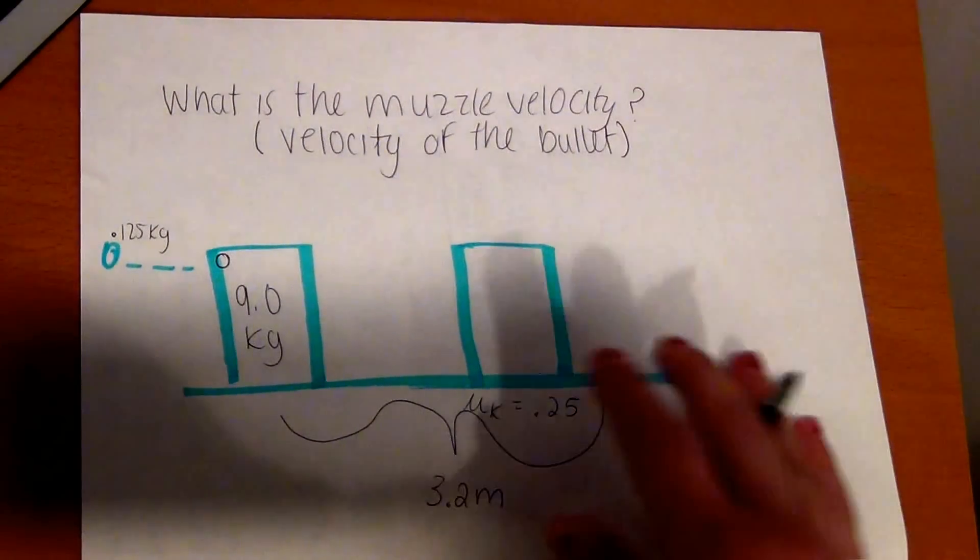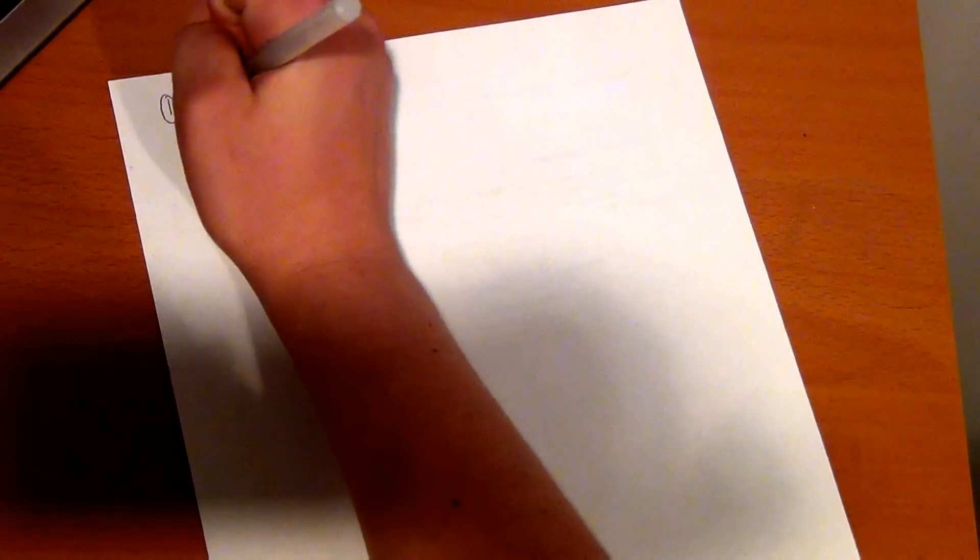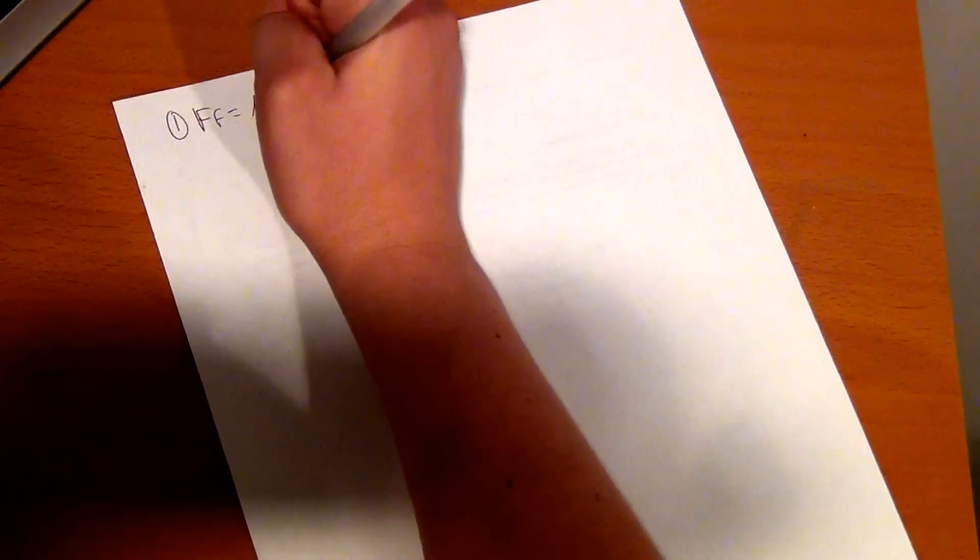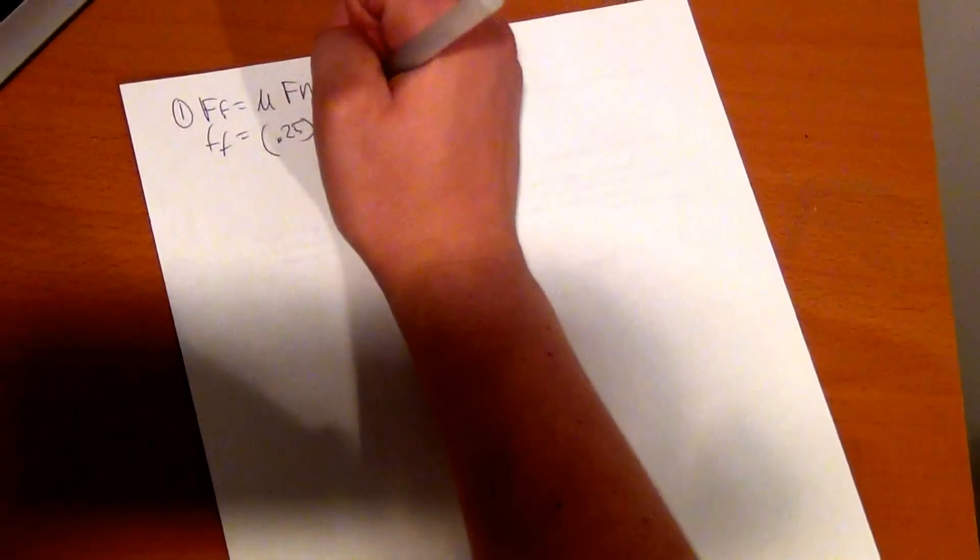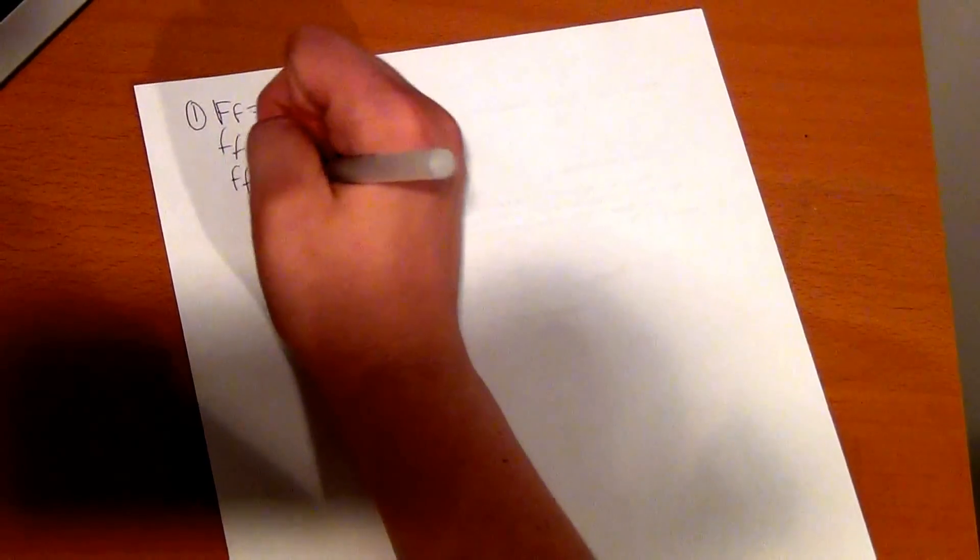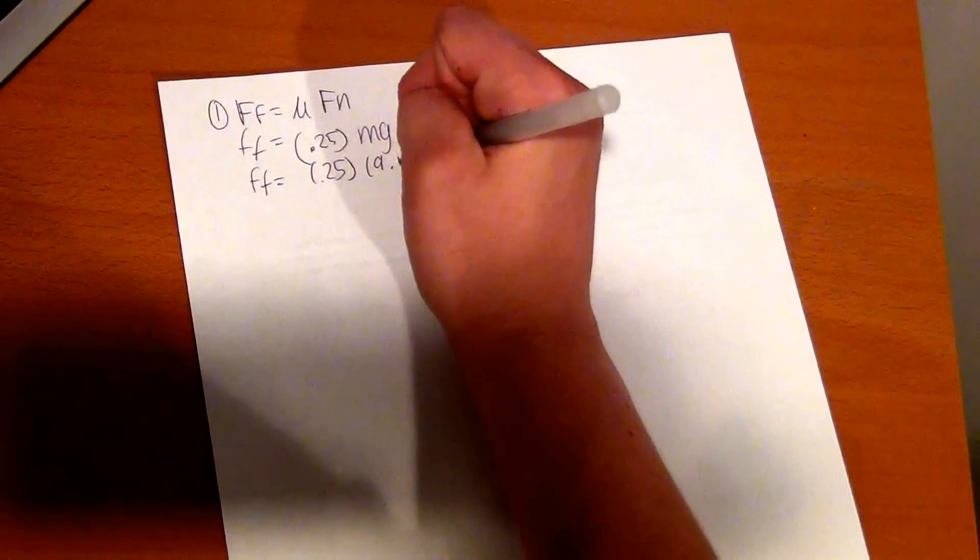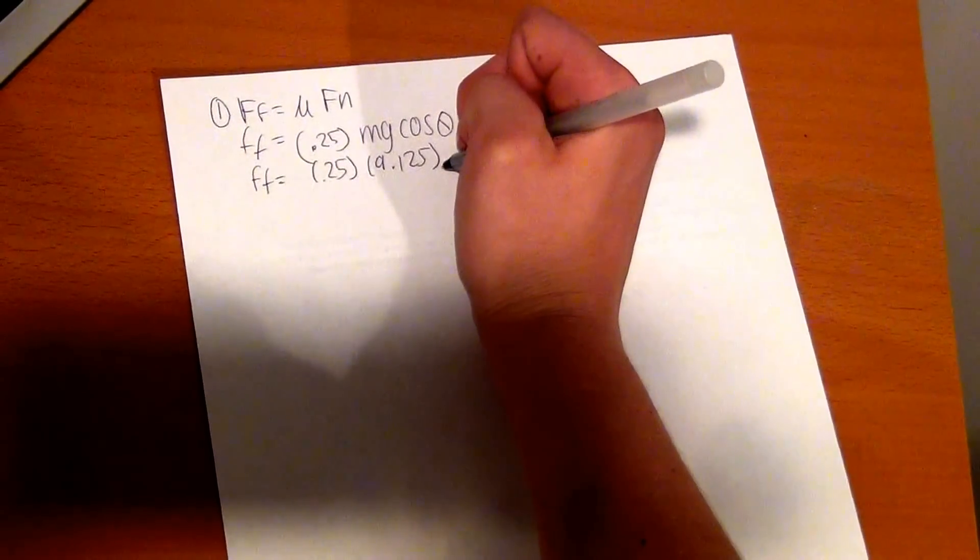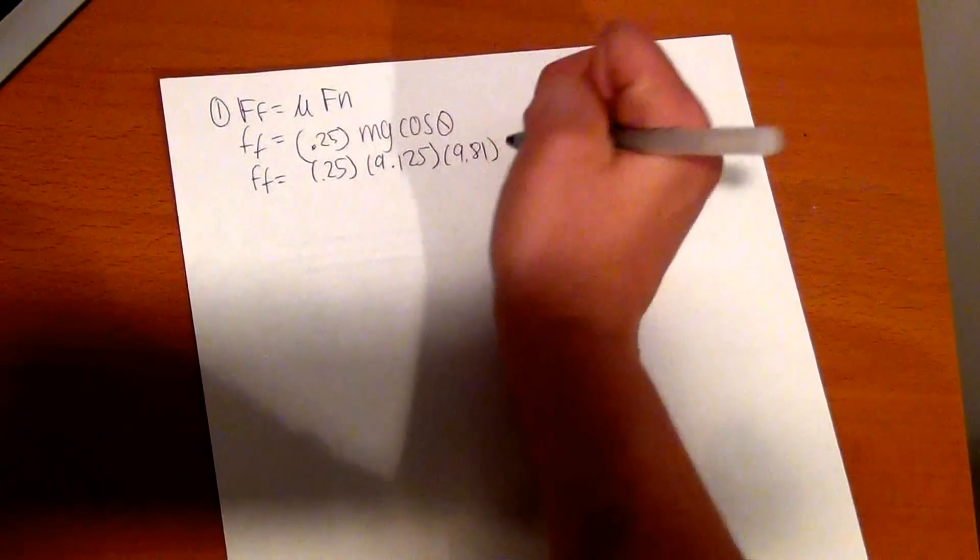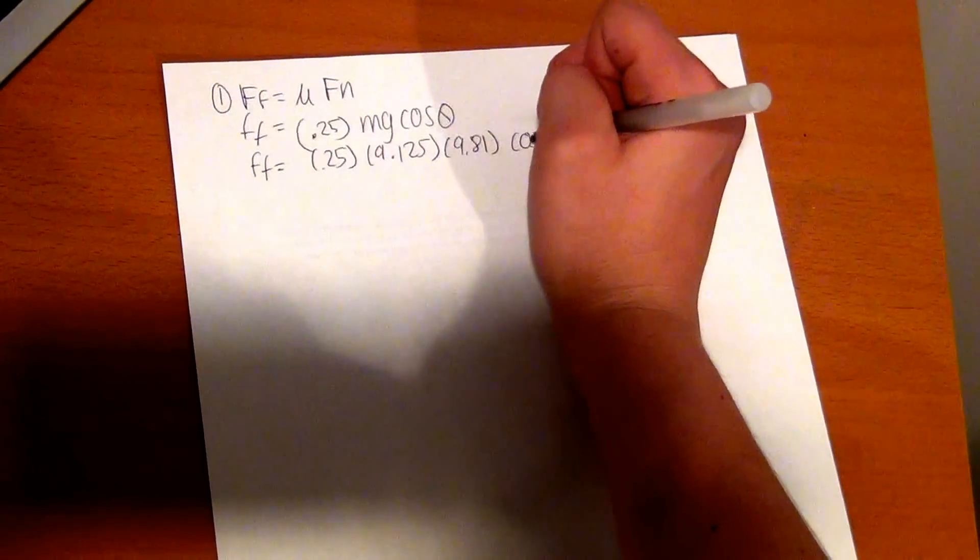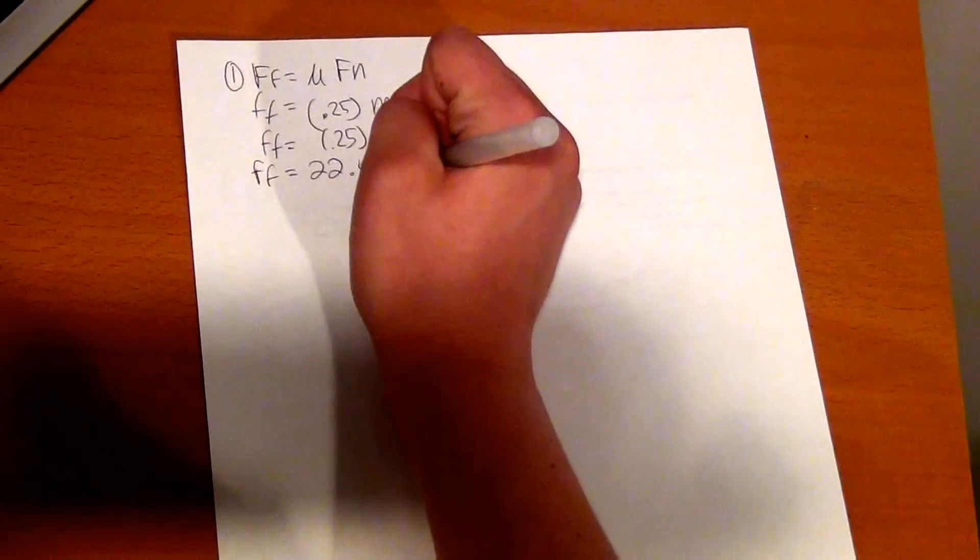The first thing you have to do to find the muzzle velocity is find the force of friction. So you find this using F equals mu Fn, where mu equals 0.25 and Fn equals mg cosine theta. The m equals 9.125 because you have to add the mass of the block and the bullet. G is 9.81, and since there's no theta, cosine just equals 1. After you put these numbers in your calculator, you should get 22.4 newtons.